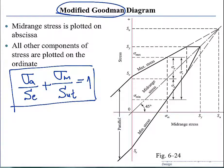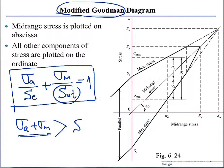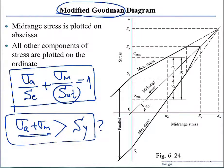However, if sigma mean is ratioed to the ultimate strength, there is a potential possibility that the total stress — sigma alternating plus sigma mean — can exceed the yield point. If it exceeds the yield point, this raises some questions. Therefore, the Modified Goodman must consider that the sum of these two should not exceed the yield point.